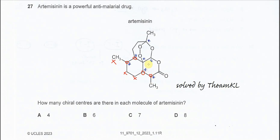And this one — this carbon also has one, two, three, four groups. So therefore this carbon is also chirocarbon.